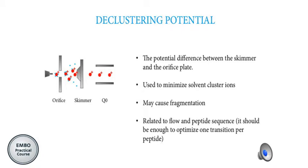The clustering potential is used to minimize the cluster ions that are formed between the analyte and the solvent. You need to be careful because a very high clustering potential can cause fragmentation of the analyte. This is related to the LC flow and to the peptide sequence, so if you want to optimize it, it is enough to optimize for one transition per peptide because the optimal value will be the same for all transitions.